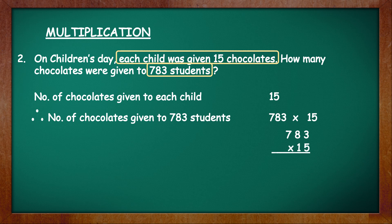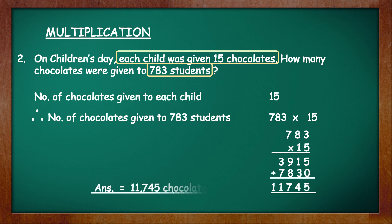783 into 15. We will do long multiplication here. First multiply by 5: 783 into 5 is 3915. Next, put the 0 and multiply by 1: 783 into 1 is 783. Then add both the numbers: 11745. That is the total number of chocolates given to 783 students. The answer is equal to 11745 and the unit is chocolates.